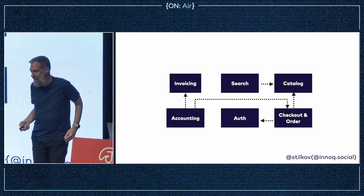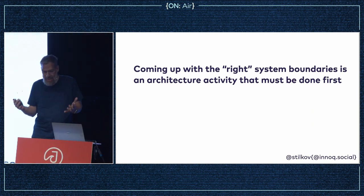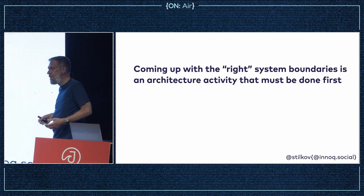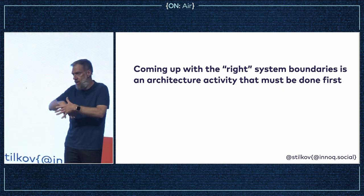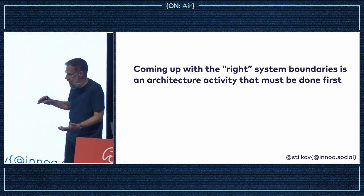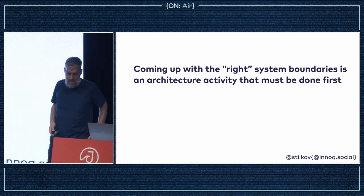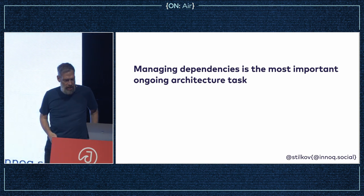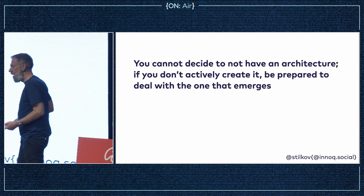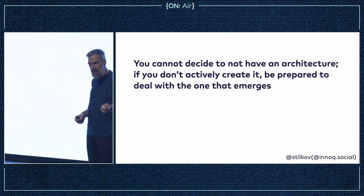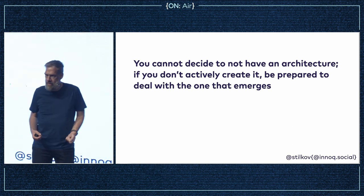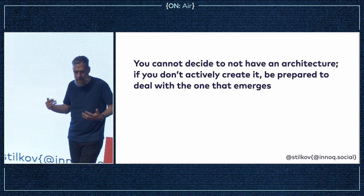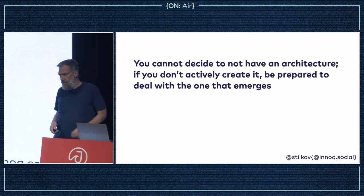These structural decisions need to be made pretty early on and have very high importance — it's critical that you get the right boundaries. Coming up with the right system boundaries is an architectural activity you have to do first, and it's often done by the wrong people because nobody with a technical background collaborates with domain experts. Sometimes it's just organizational structure that leads to these things. You cannot decide to not have an architecture — you can decide to not do architectural work, but then you'll end up with something that just emerges.